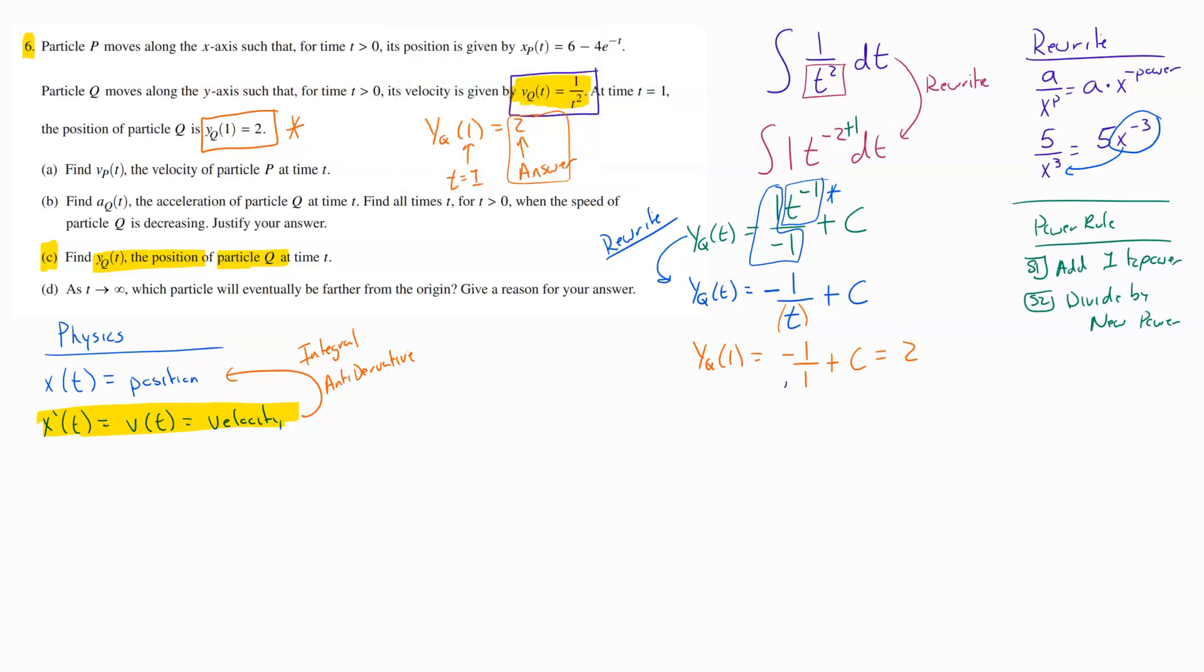Working that algebra out, negative 1 divided by 1 is going to get me negative 1 plus C has to equal 2. And then we're just going to move this negative 1 over to the other side now. And we come out of there with C equals 3. And so we're almost done.